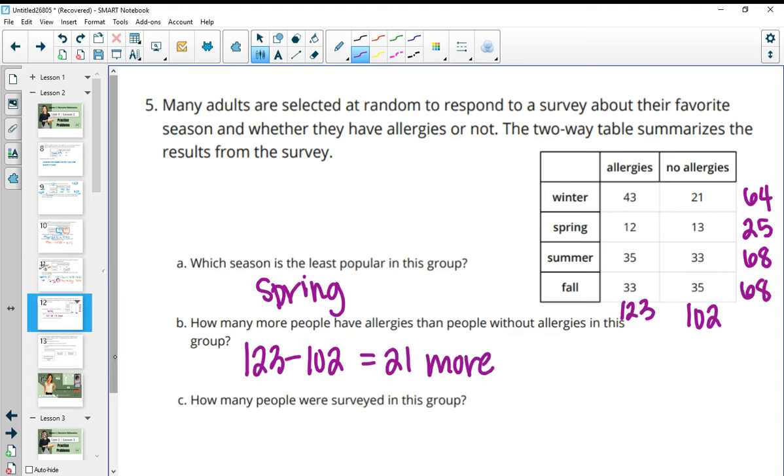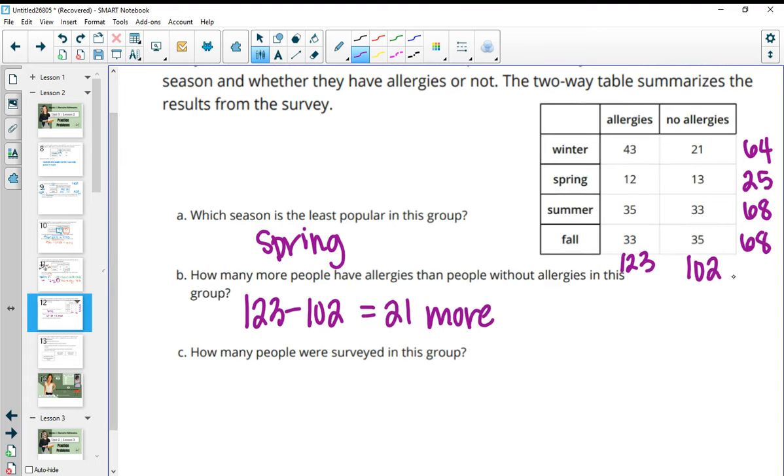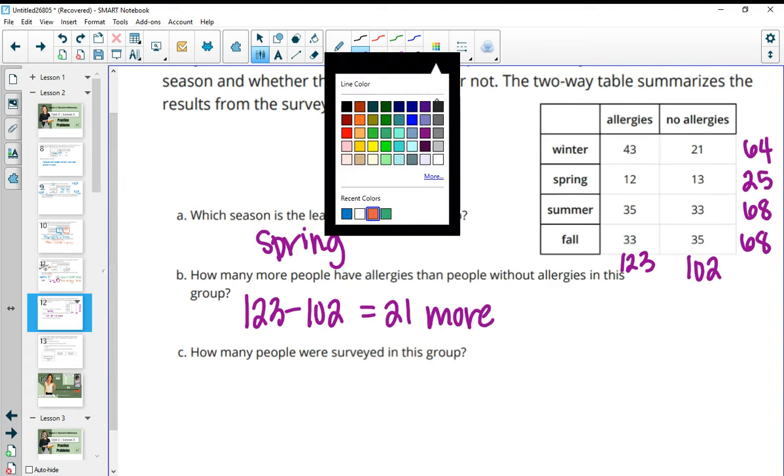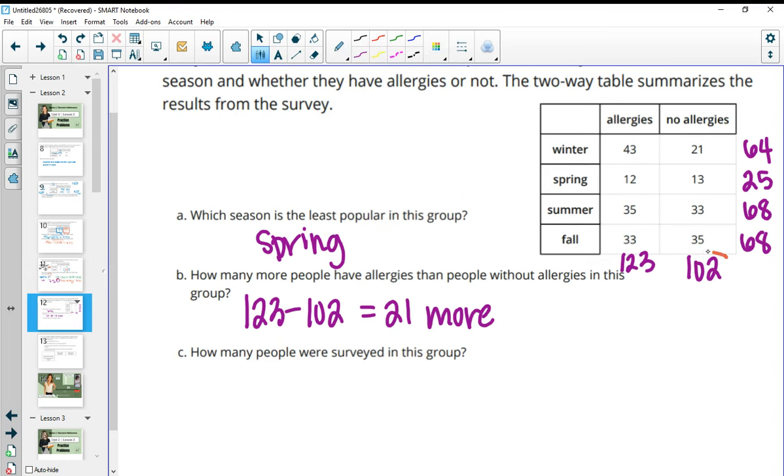And then how many people were surveyed in the group? You can total up either of these. And to be honest, for me, I like to do both. So I would add these together and then add these to make sure I did it right. So this would give me 225 when I add these. And then I'll just double check and add up all of these as well. So 64 plus 25 plus 68 plus 68 also gives me 225. So then that's good. That means everything I did was correct.